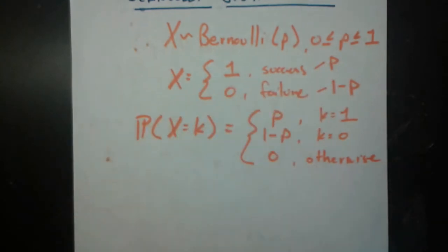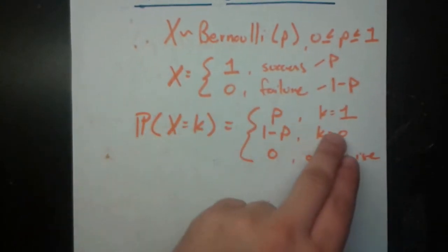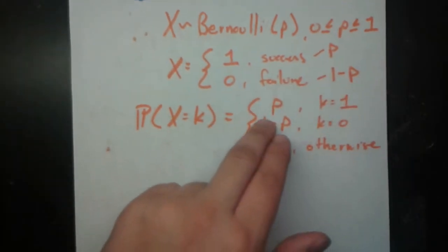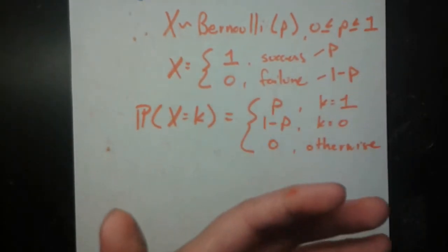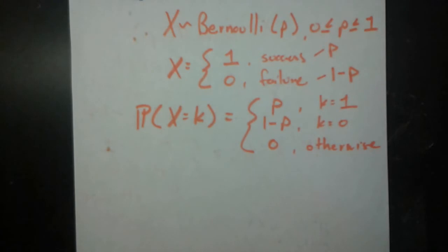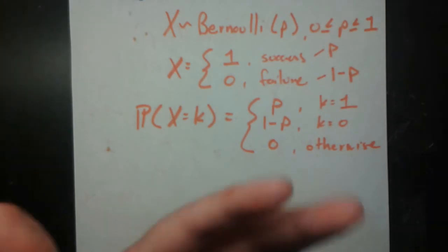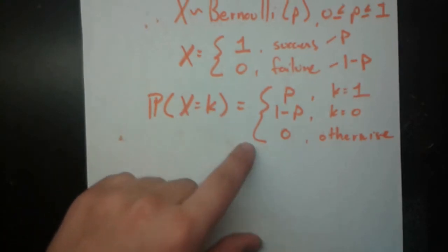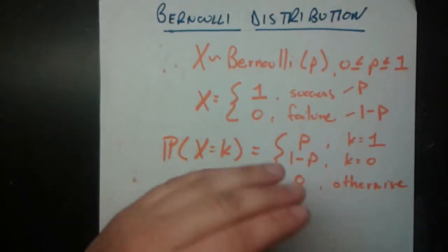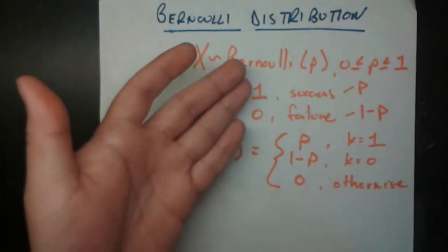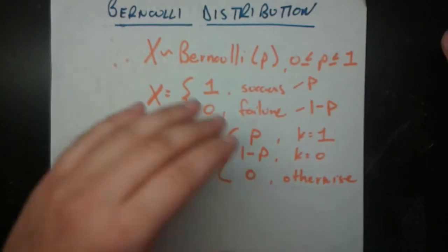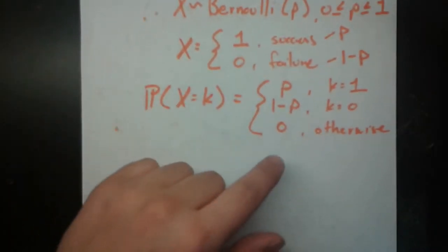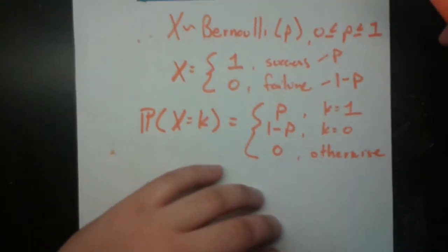What about the probability that x equals 0? That happens if we have a failure, with probability 1 minus p, which is true. Now if we try to plug in anything else for k, say k equals 2, what's the probability that x equals 2? We see that x can never equal 2 because it can only take the values 1 or 0 — we can only have a success or failure. So it's going to be 0 in all other cases.